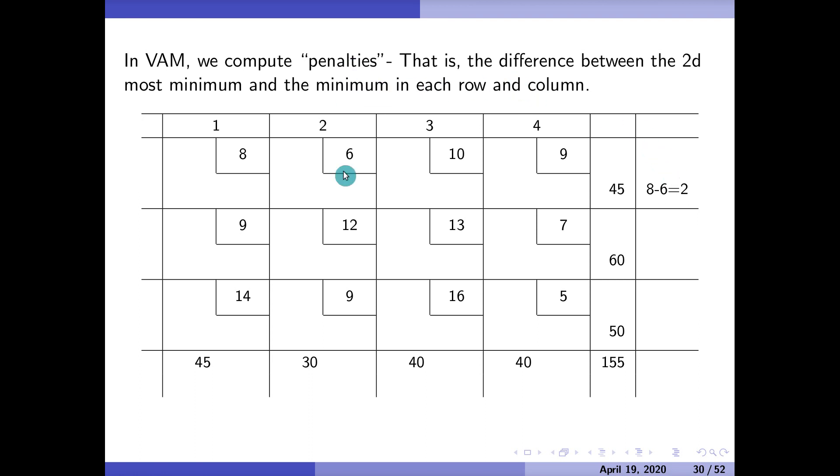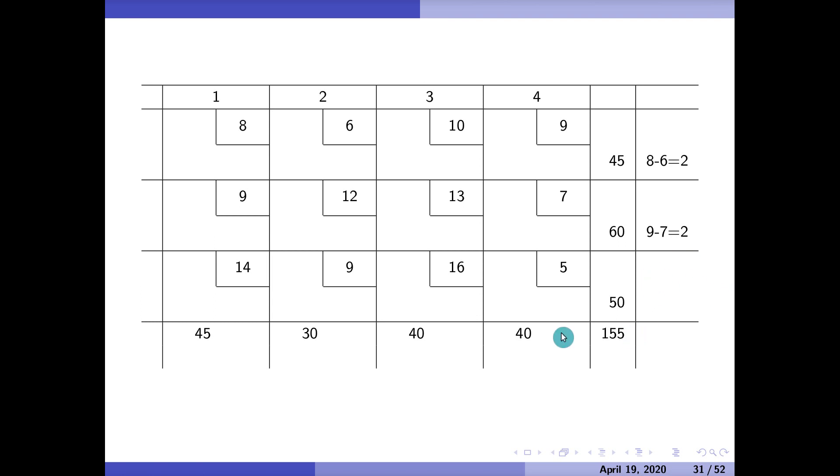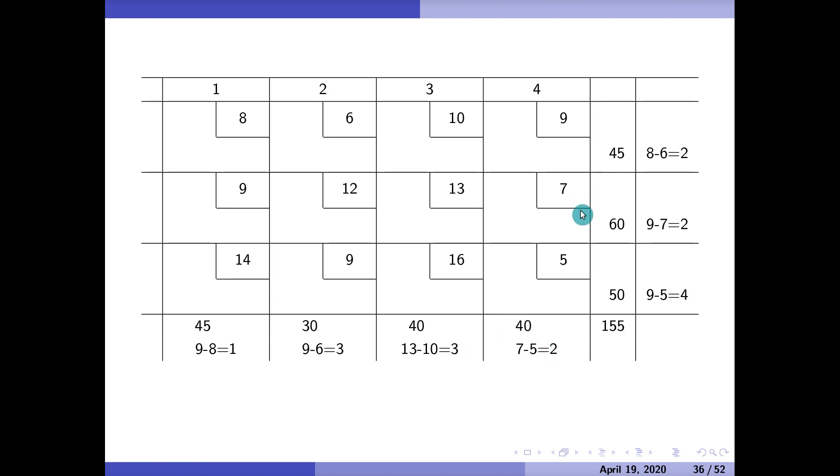So let's see what these penalties are in this case. This first row, I take the minimum and the next minimum. So that's 8 and 6. 8 minus 6 is 2, so the penalty here is 2. So notice that that's not a very big penalty. So if I don't give a chance to use my 6, the 8's not really that bad. The next penalty will be 9 minus 7, it looks like. So 9 minus 7 is also 2. That's not too bad. The next penalty will be 9 minus 5, which is 4. That's a little bit bigger. The next penalty, 9 minus 8, that's only 1, so it doesn't really matter. You know, those two are so close together. This one's going to be 9 minus 6, which is 3. That's starting to get a little high. 13 minus 10, 3, that's a little high. So 7 minus 5 is 2. That's not too bad.